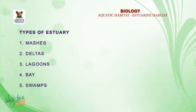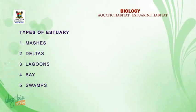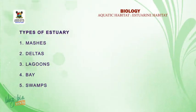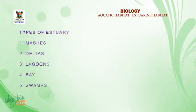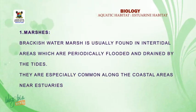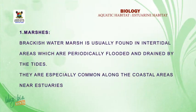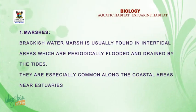Types of estuarine habitats: we have marshes, deltas, lagoons, bays, and swamps — so there are five types. Let's look at them one after the other. Marshes: a marsh is a brackish water habitat usually found in intertidal areas which are periodically flooded and drained by the tides. We shall continue from here after a break.